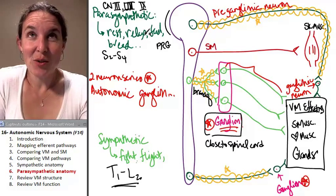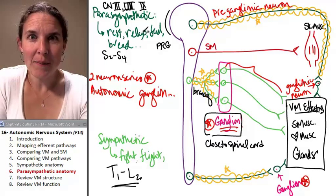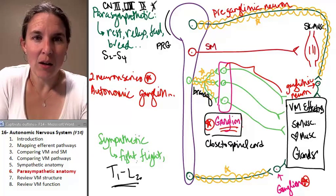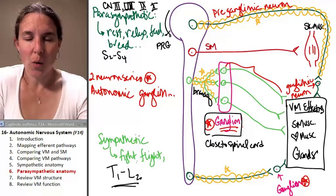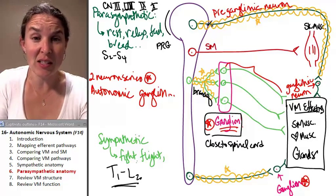Nine, to make you salivate some more. And ten, to do everything else. What cranial nerve was ten? That was the vagus nerve.